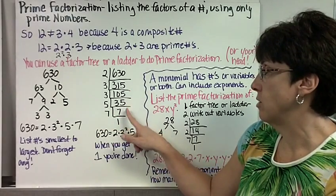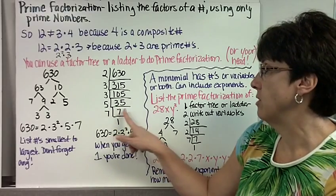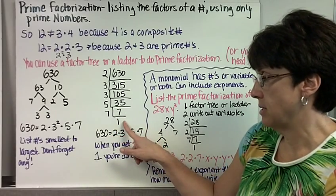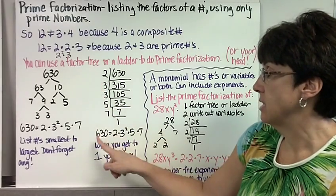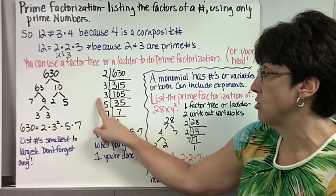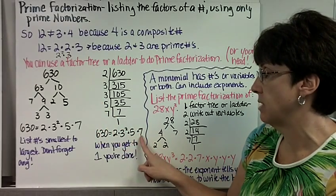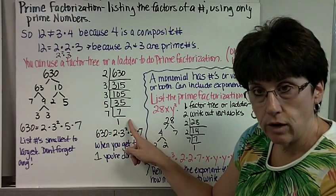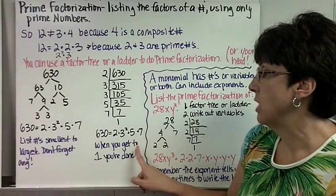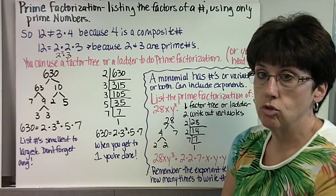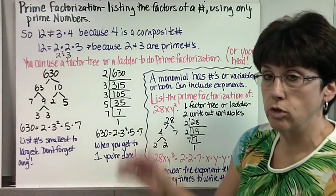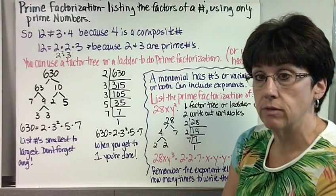5 goes into 35 7 times. 7 goes into itself once. So if I were doing the ladder, I would say 630 equals 2 times 3 squared times 5 times 7. And when you're doing the ladder for prime factorization, when you get to 1, you're done. You have to go all the way to 1, as opposed to greatest common factor and least common multiple, where you just go to the numbers being relatively prime.